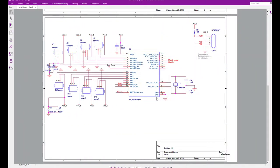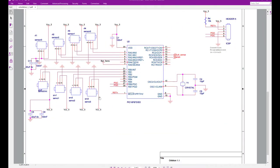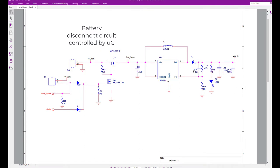The schematic is very simple. There's the microcontroller where the sensors are attached to the analog inputs and the three servos to the digital outputs. Then you have a crystal and a boost converter to produce 5 volts from the 3.7-volt battery, and a battery disconnect circuit controlled by the microcontroller.